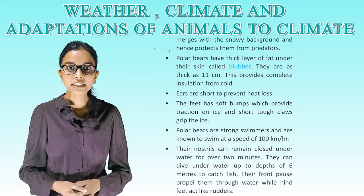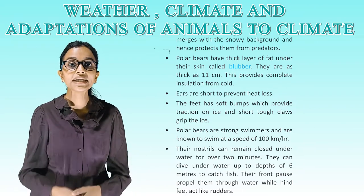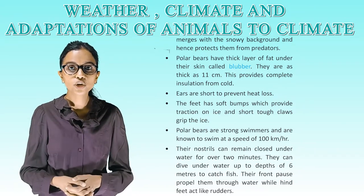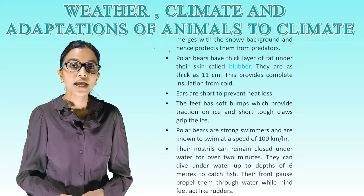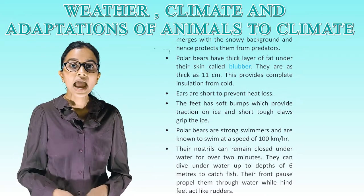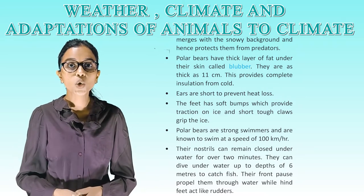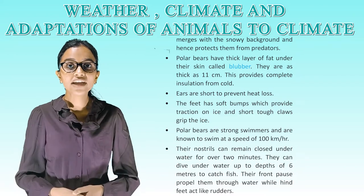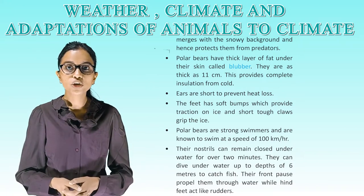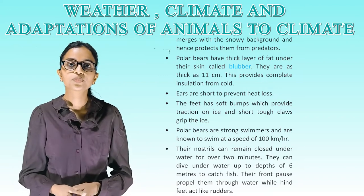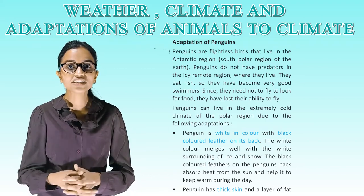Polar bears have a thick layer of fat under their skin called blubber, as thick as 11 centimetres, which provides complete insulation from the cold. Ears are short to prevent heat loss. The feet have soft bumps which provide traction on ice, and short tough claws grip the ice. Polar bears are strong swimmers, known to swim at a speed of about 10 kilometres per hour. Their nostrils can remain closed underwater for over two minutes and they can dive to a depth of six metres to catch fish. Their front paws propel them through water while hind feet act like rudders.